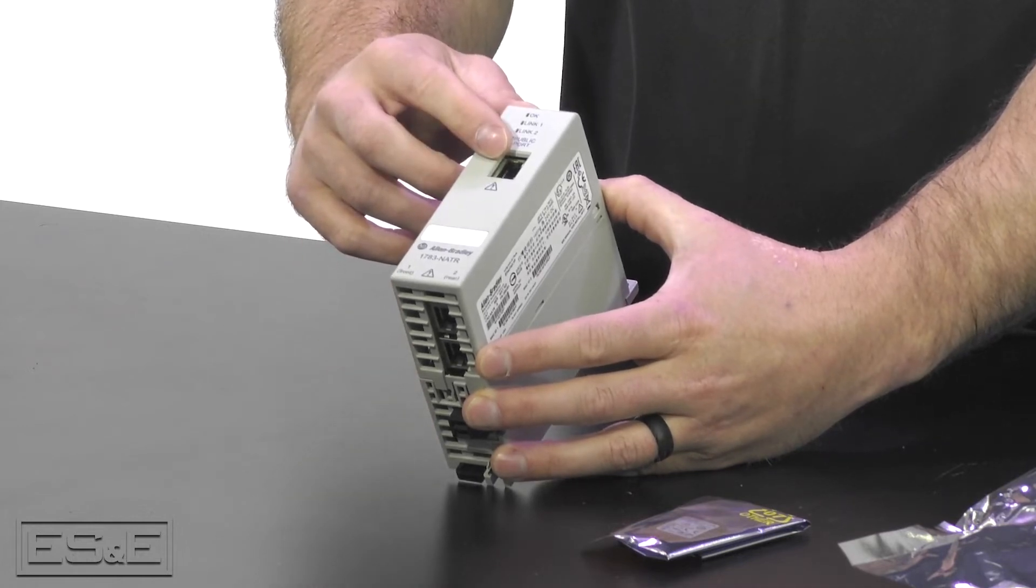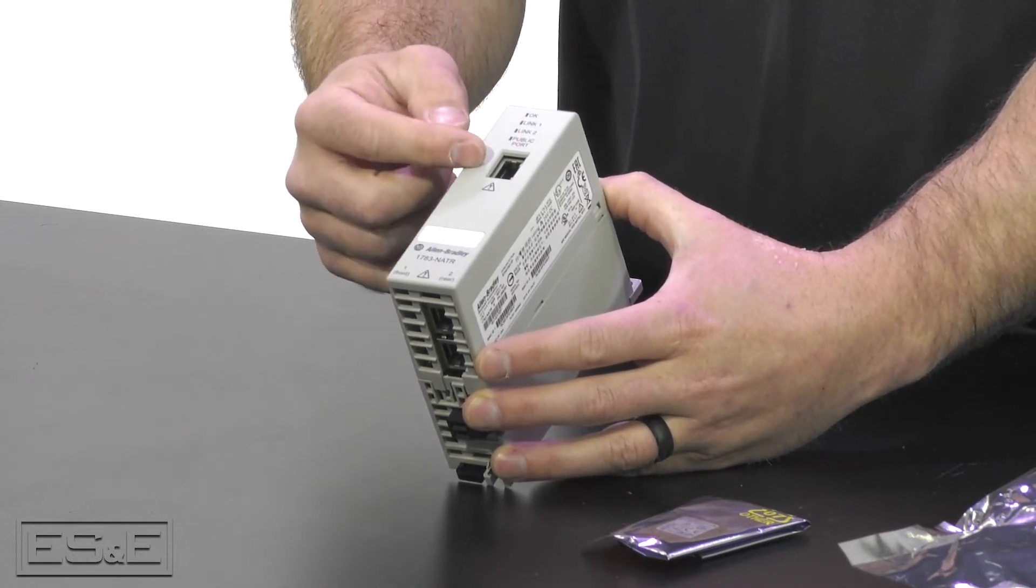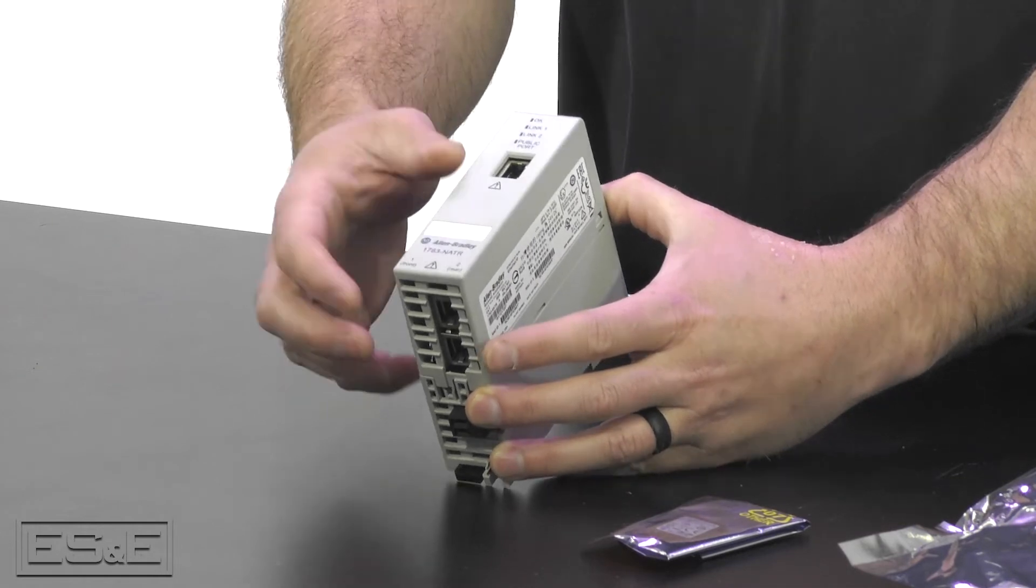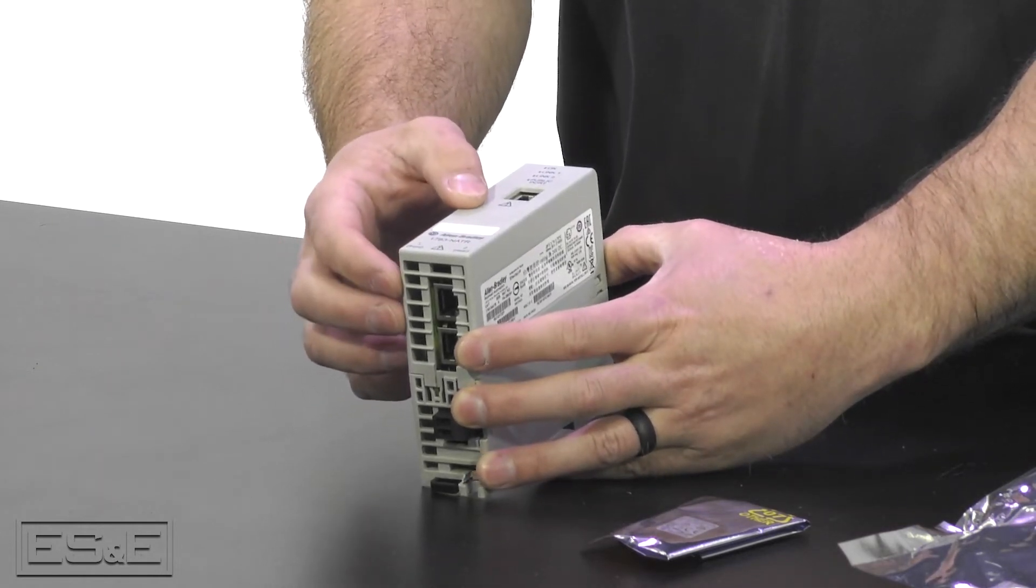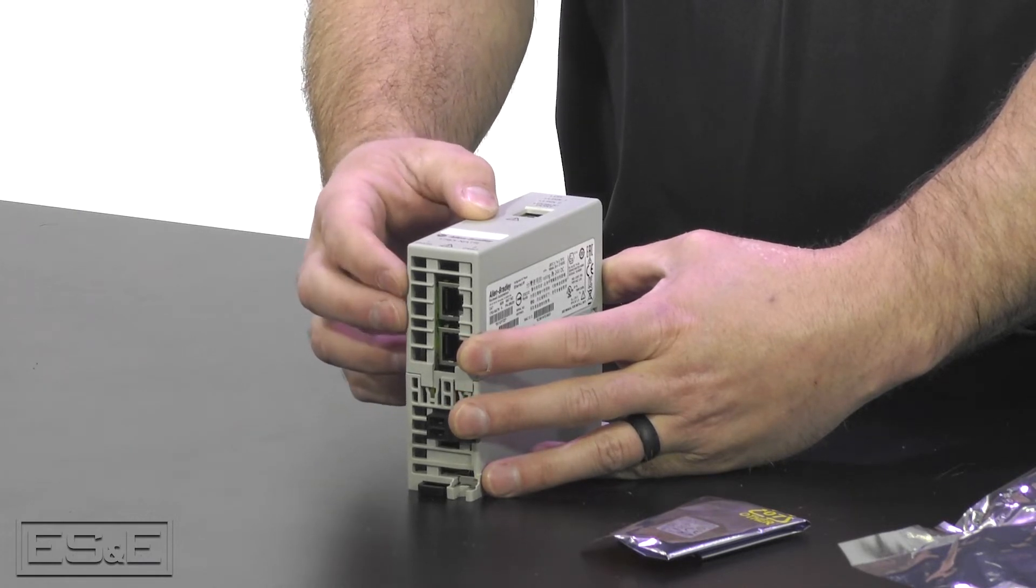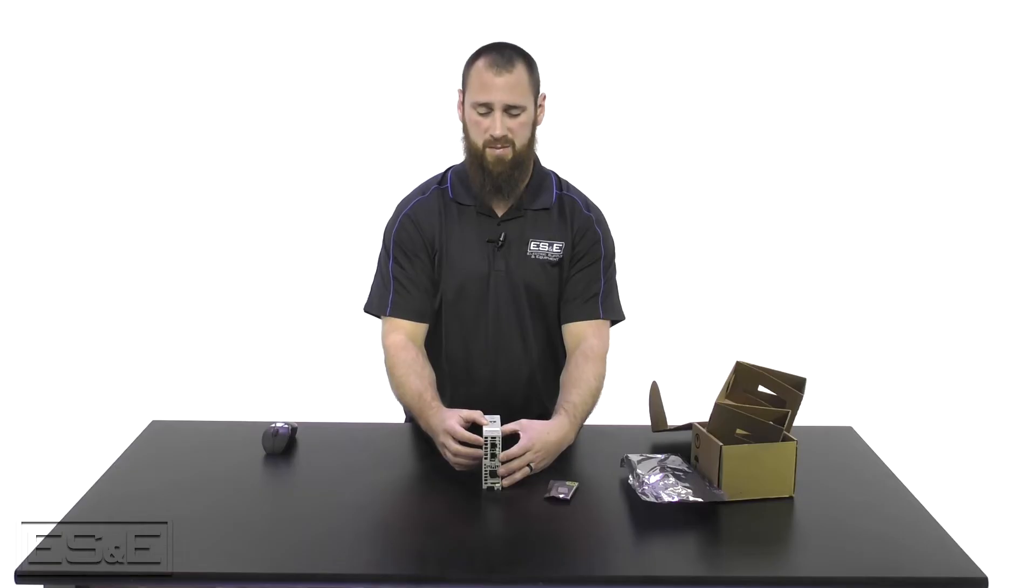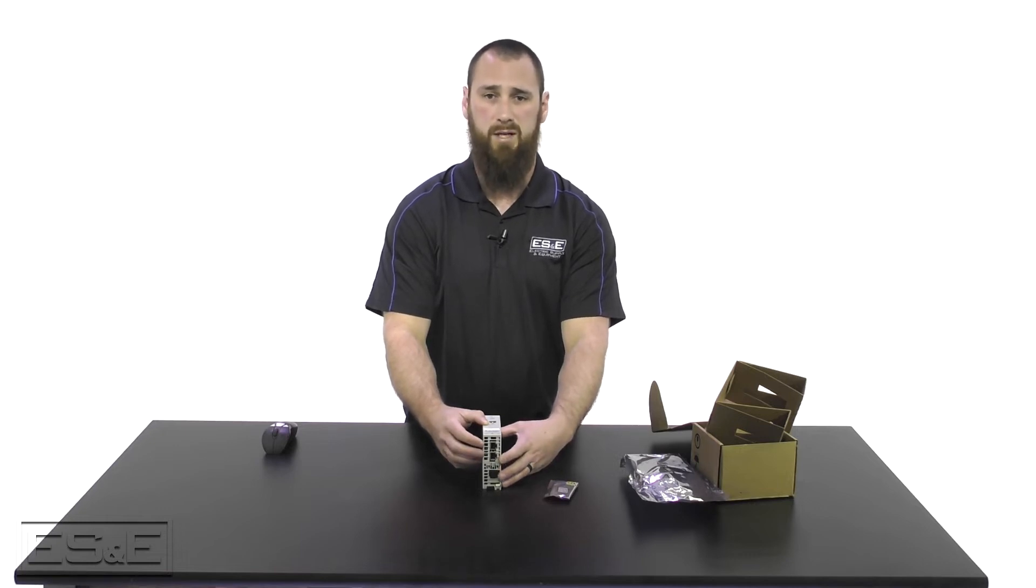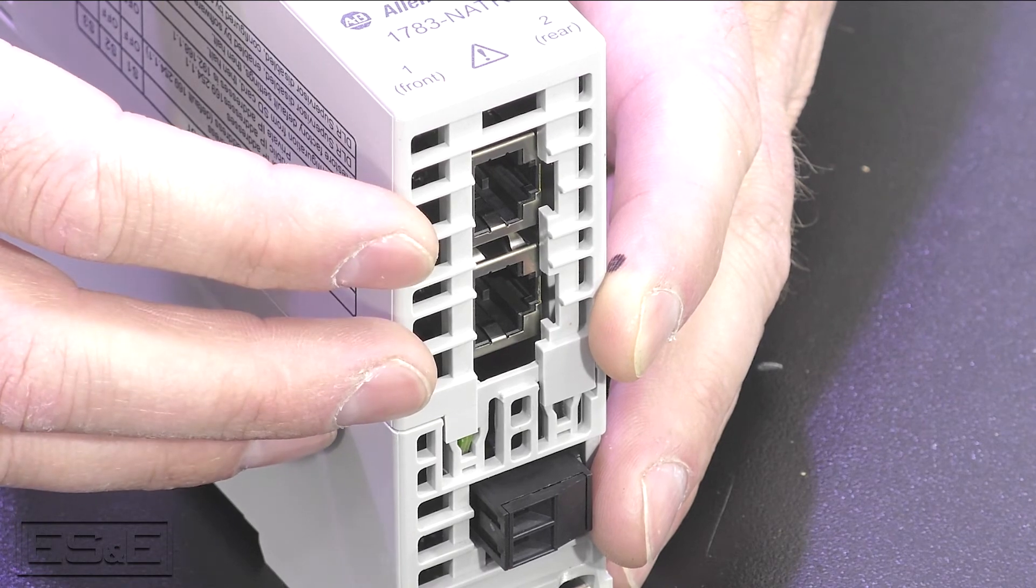There is one for the front which is your public or uplink port and then there is one for the bottom two ports. The bottom two ports are your local ports and they have the same IP address. So they can work as a device level ring or DLR. The other option is to do a linear topology where you daisy chain equipment in one port and back out the other.